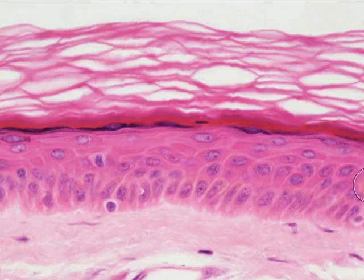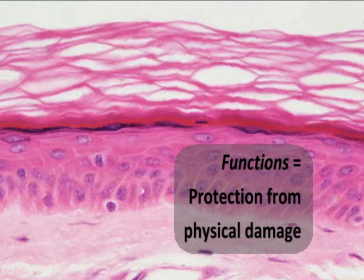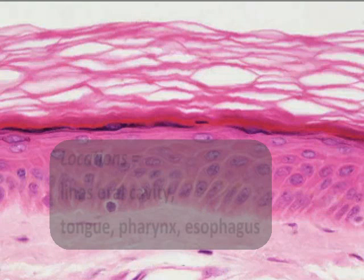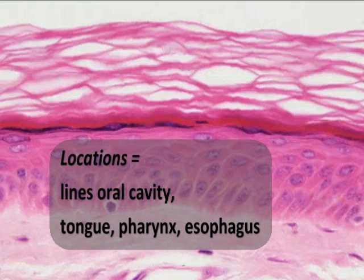We see this as a very strong physical protecting epithelial tissue where it's found lining the entire inner mouth, the oral cavity, tongue, the pharynx, and the food tube, the esophagus.